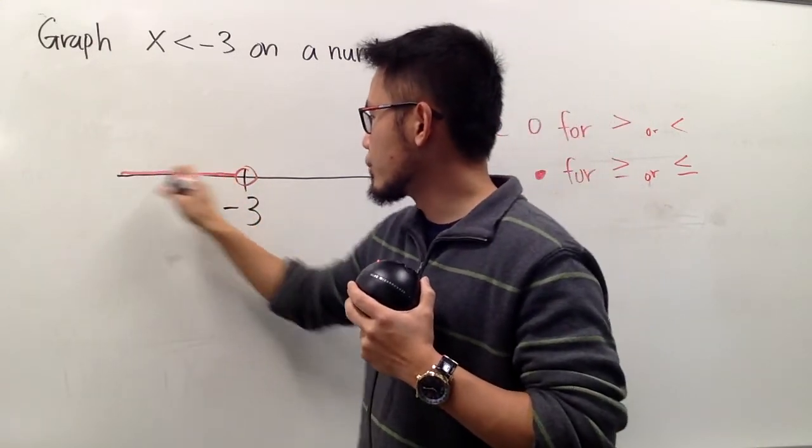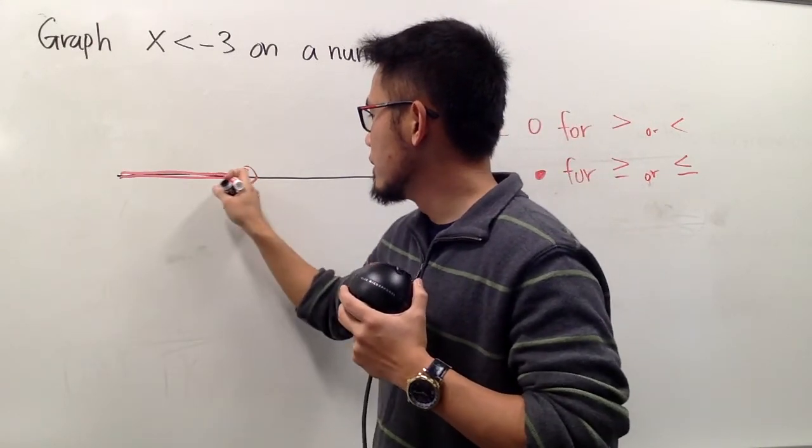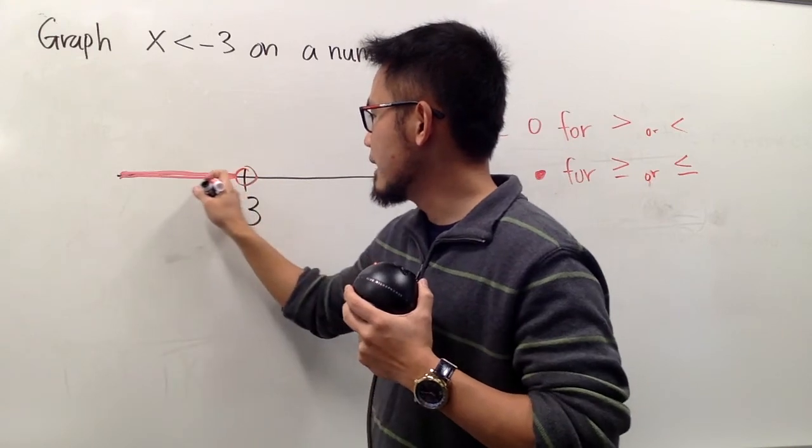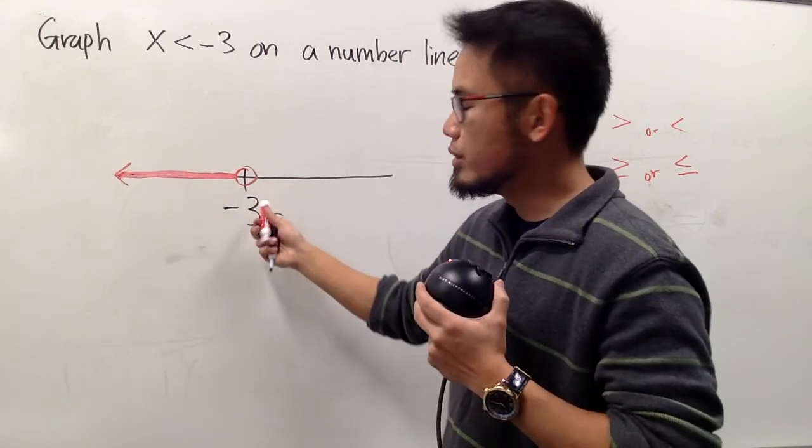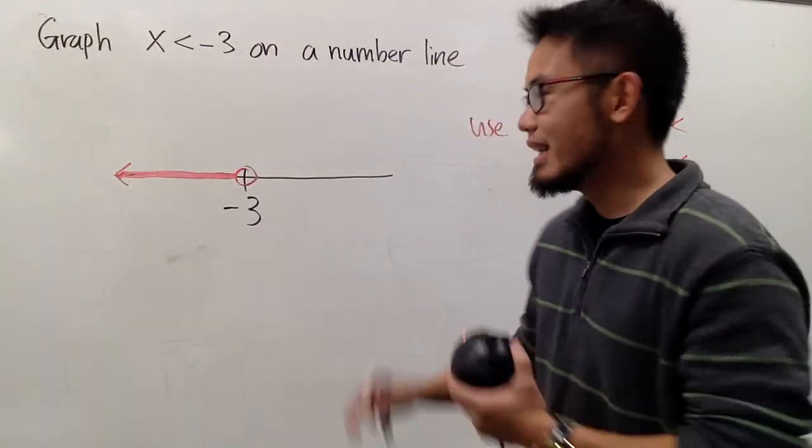So we can just go right here, just color this, and make the graph nice and pretty, like that, and draw an arrow, meaning from negative 3 all the way to the left, like that, right? So that's it.